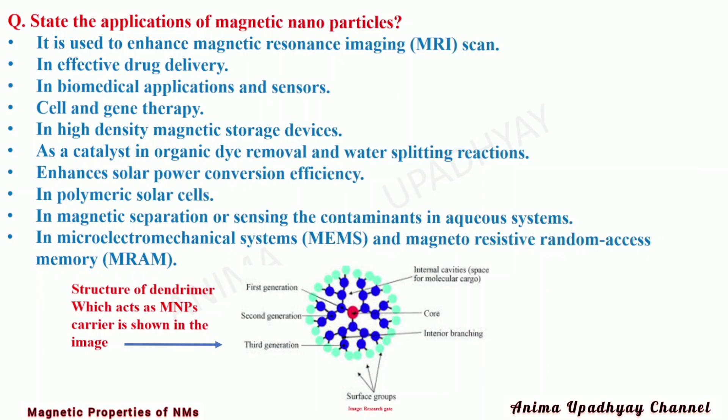What are the applications of magnetic nanoparticles? They are used to enhance magnetic resonance imaging (MRI). They are effective in drug delivery, in biomedical applications and sensors, in cell and gene therapy, in high density magnetic storage devices, as a catalyst in organic dye removal and in water splitting reactions. They enhance solar power conversion efficiency in polymeric solar cells, in magnetic separation or sensing contaminants in aqueous systems, in micro-electromechanical systems (MEMS), and in magnetoresistive random access memory (MRAM).